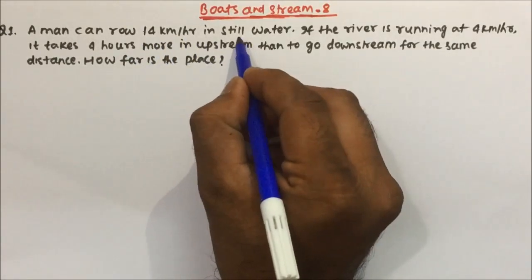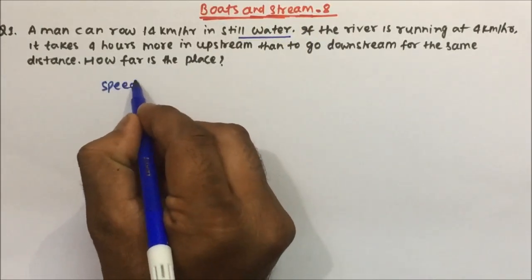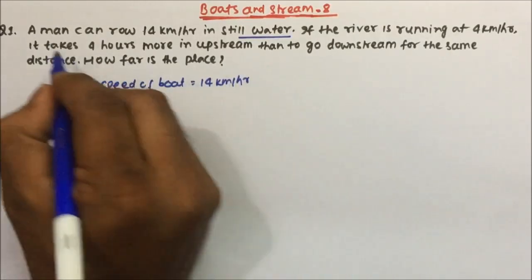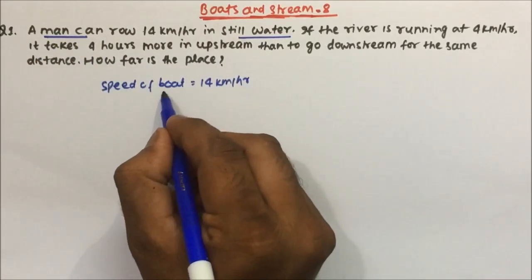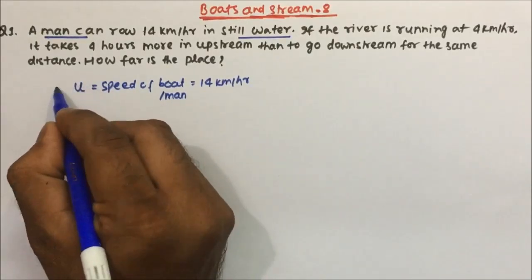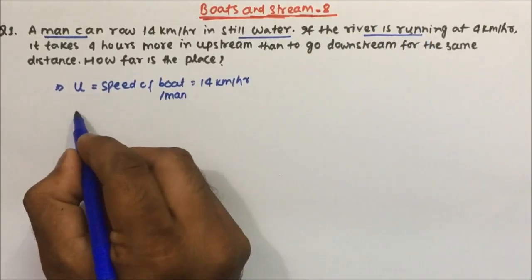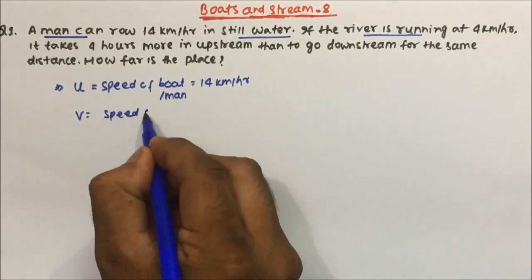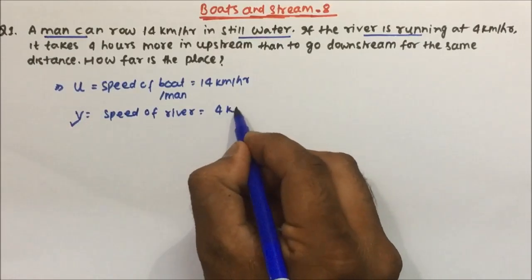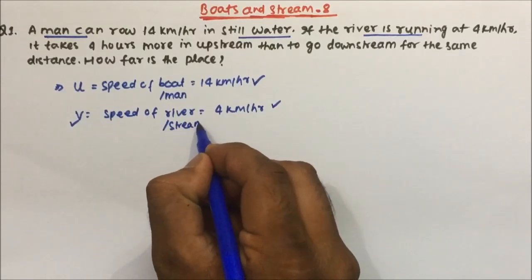A man can row 14 km per hour in still water. So what they have given is the speed of the boat — speed of boat equals 14 km per hour. Speed of man or speed of boat in still water is 14 km per hour, which we denote by U. And if the river is running at 4 km per hour, that is the speed of the river, which we denote by V. So we have the speed of boat and the speed of river, also called speed of stream.